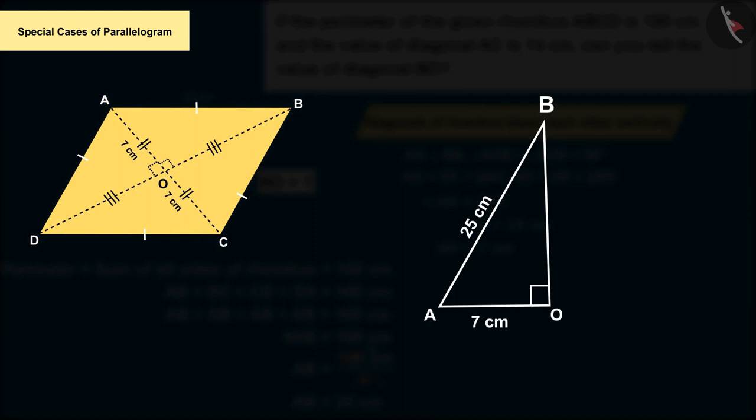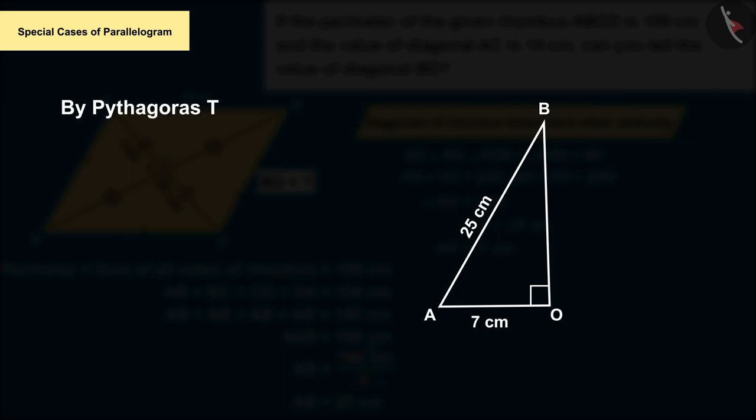In which we find the measurement of BO using the Pythagorean theorem, which we get as 24 centimeters.